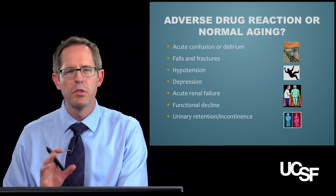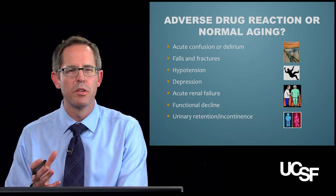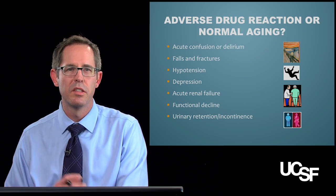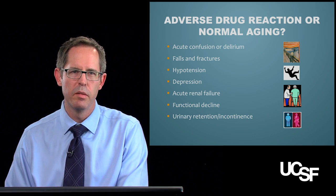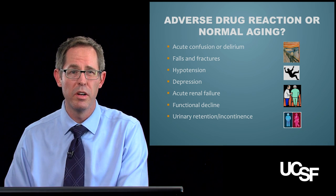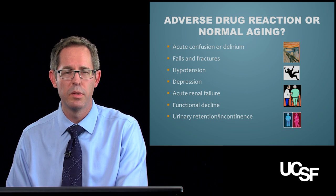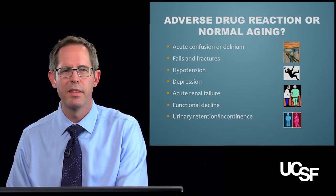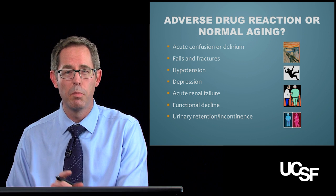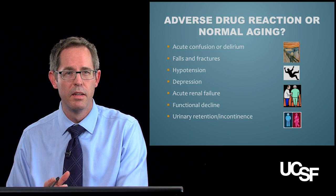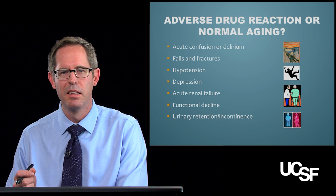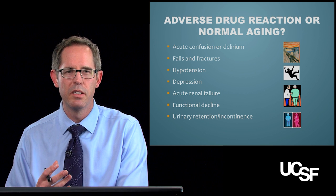Adverse drug reactions can be difficult to identify in the elderly, because they might present as confusion or delirium, falls, fractures, hypotension, functional decline, or urinary incontinence or retention. Remember, those are a lot of the same symptoms we saw in the online module part one — they can be adverse drug reactions, but they can be mistaken for just normal aging.